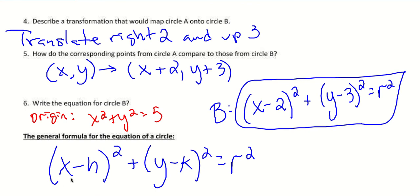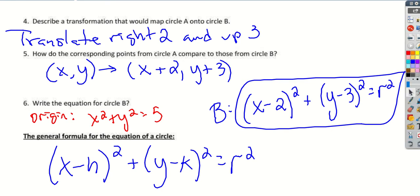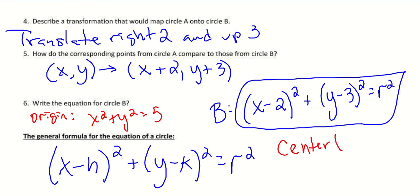The general formula is going to be x minus h squared plus y minus k squared equals r squared. What these coordinates inside the formula mean is that the center is going to have coordinates of h comma k.